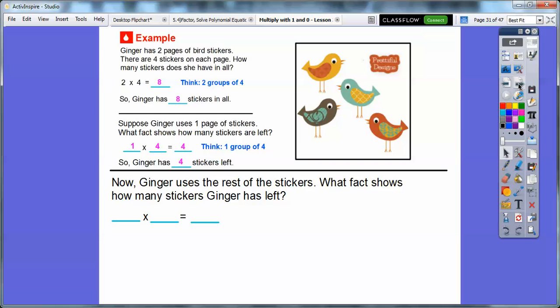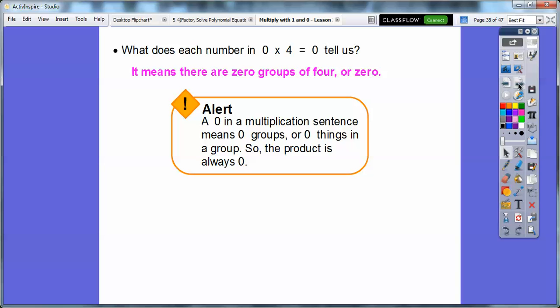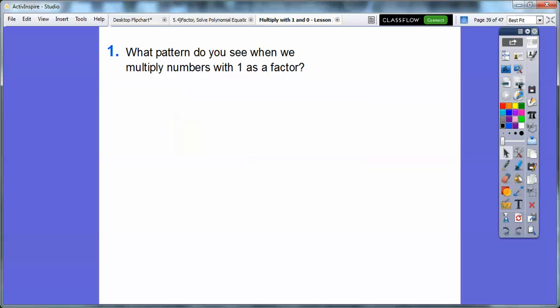Now Ginger uses the rest of her stickers. What fact shows how many stickers Ginger has left? Well, how many pages does she have left? There's zero pages left. There's zero groups of four. Well, zero groups of four just would be zero. So she would have zero stickers left. You getting the idea on this? What does each number in zero times four tell us? It just means that there are zero groups of four or just zero. There's zero stickers left. Any number, a zero in a multiplication sentence means zero groups or zero things in a group. So the product is always going to be zero. Any number times zero equals zero.